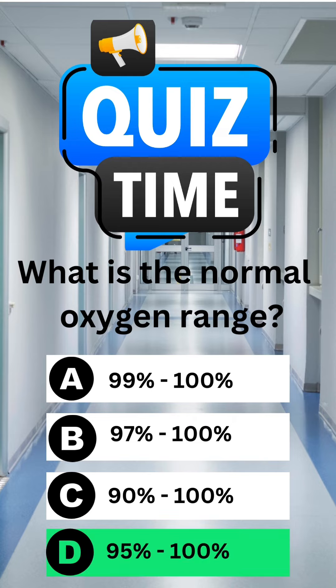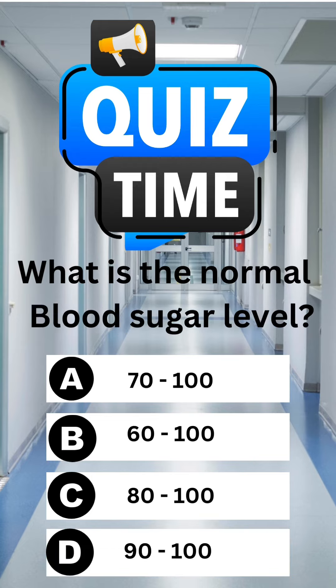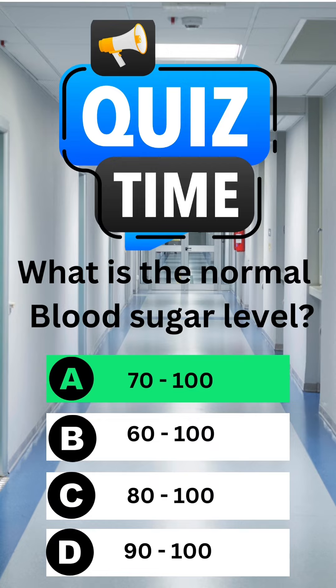What is the normal blood sugar level? A. 70 to 100. B. 60 to 100. C. 80 to 100. D. 90 to 100. The correct answer is A. 70 to 100.